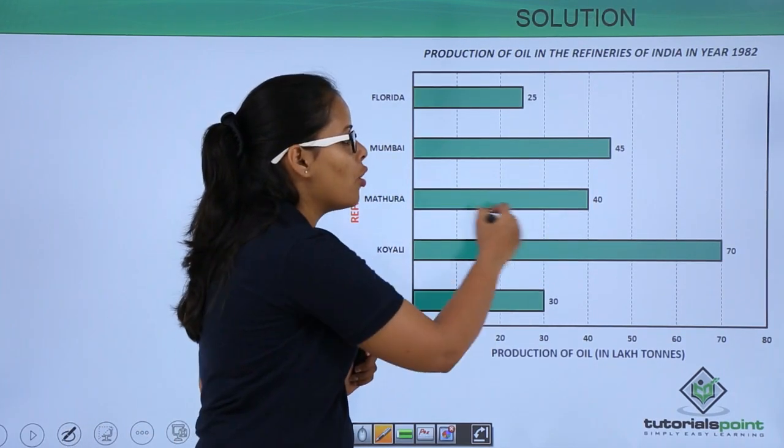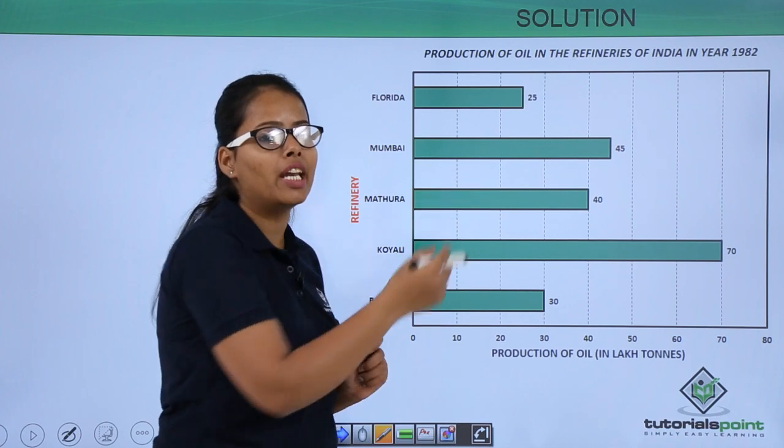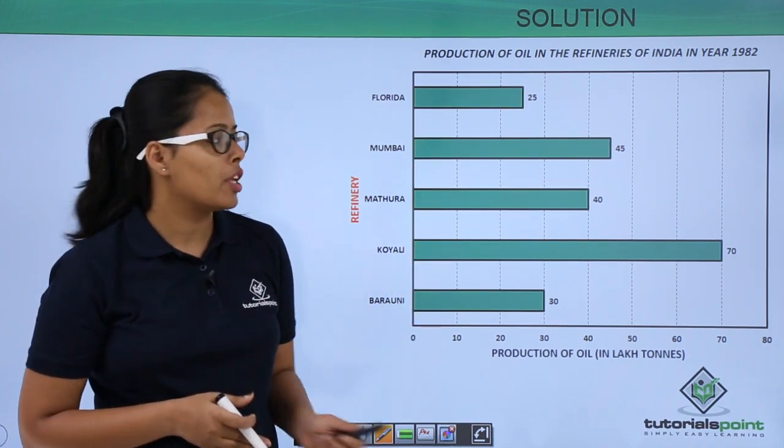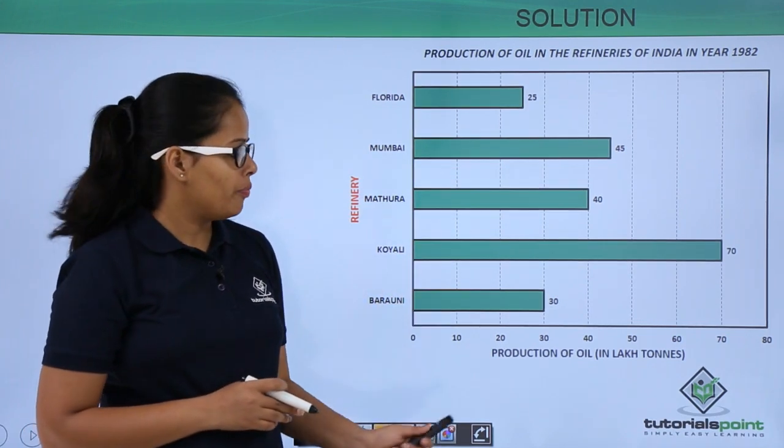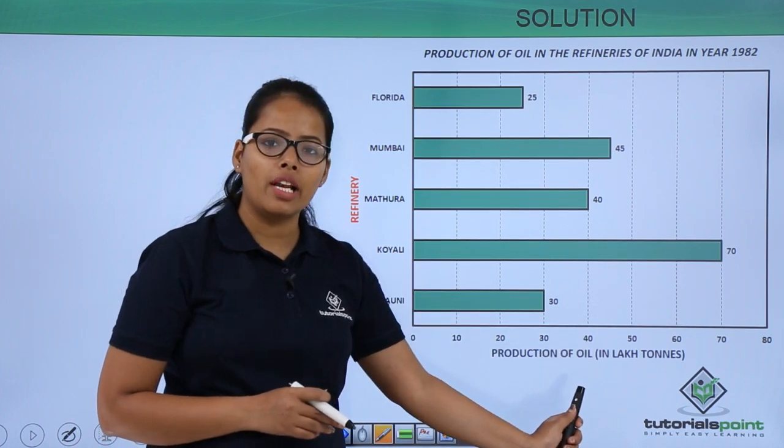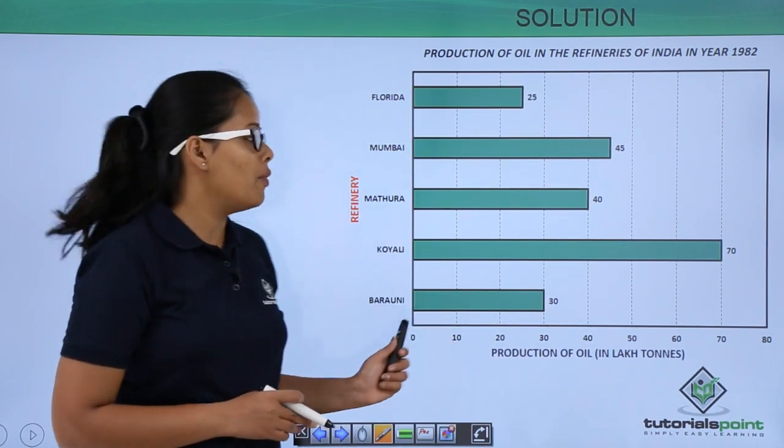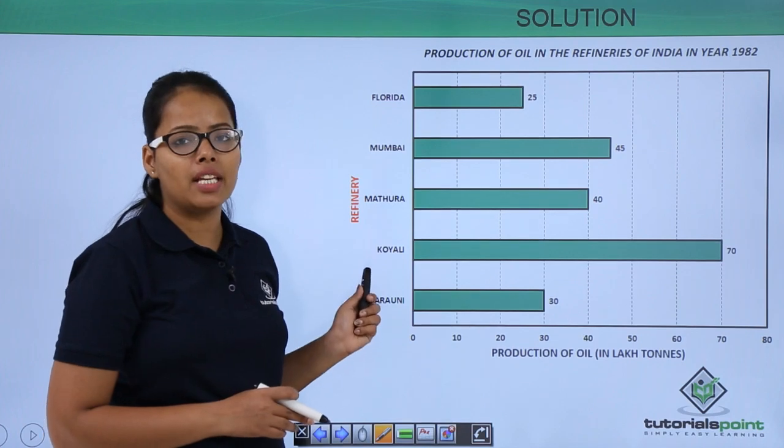These are the bars which have been drawn horizontally instead of vertically as you keep on seeing. So here this is the bar plot where the x-axis represents production of oil in lakh tons and the y-axis represents refineries in India.